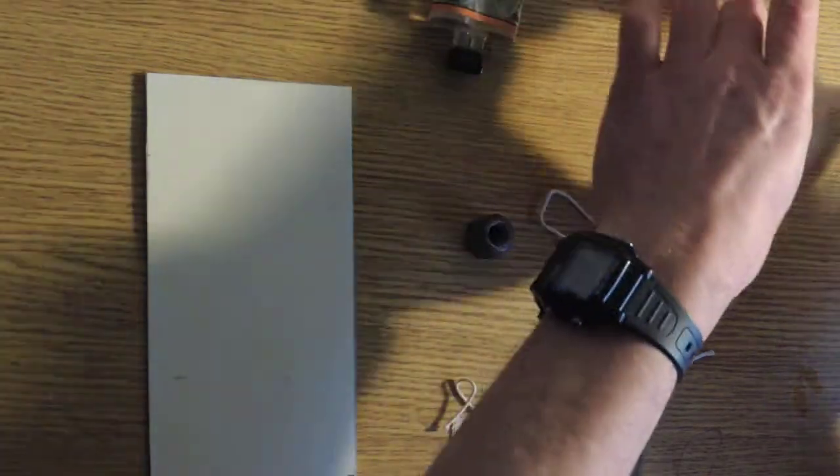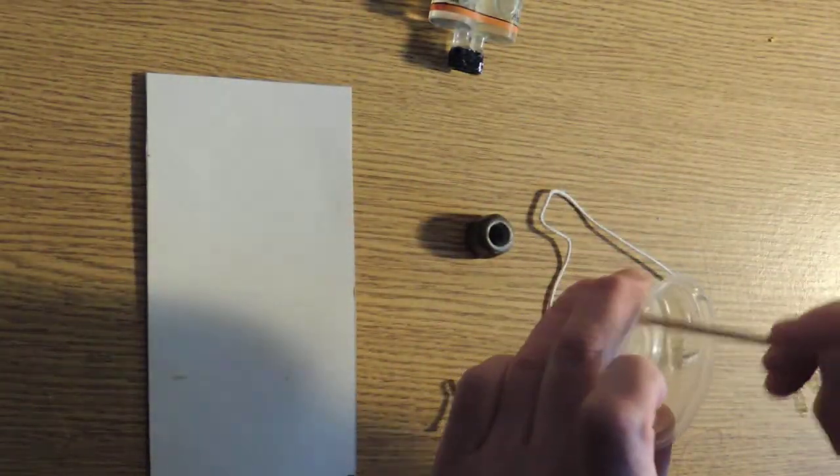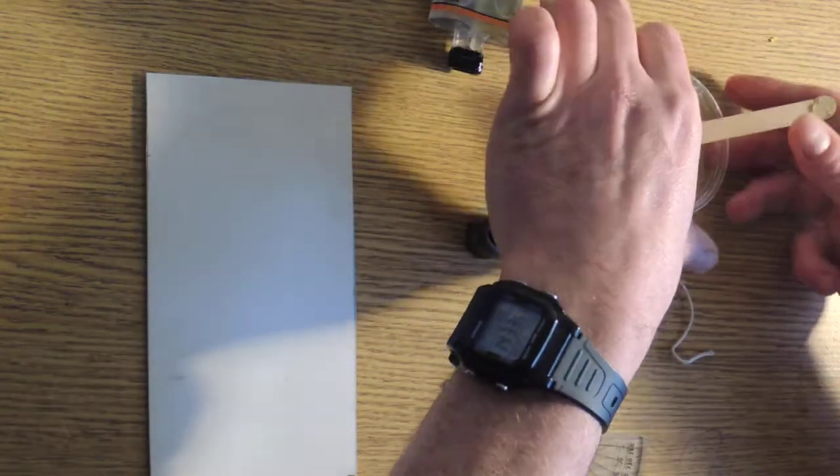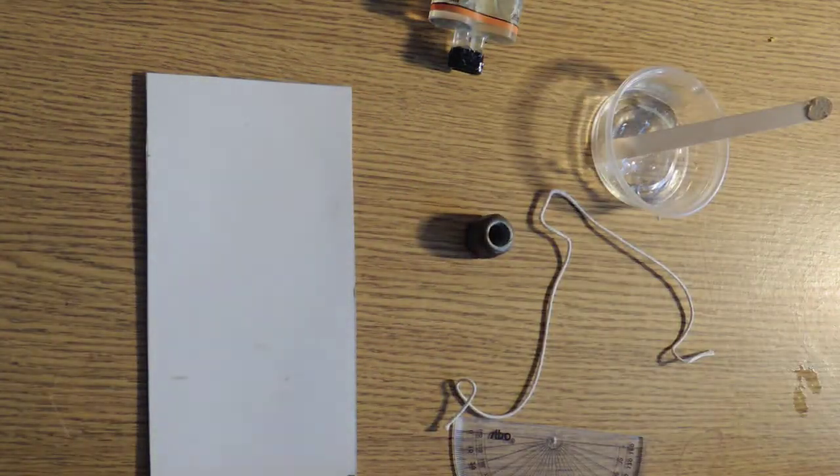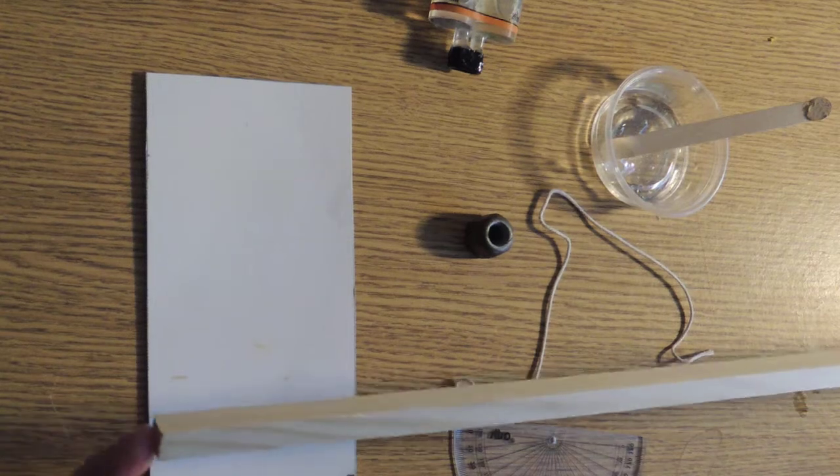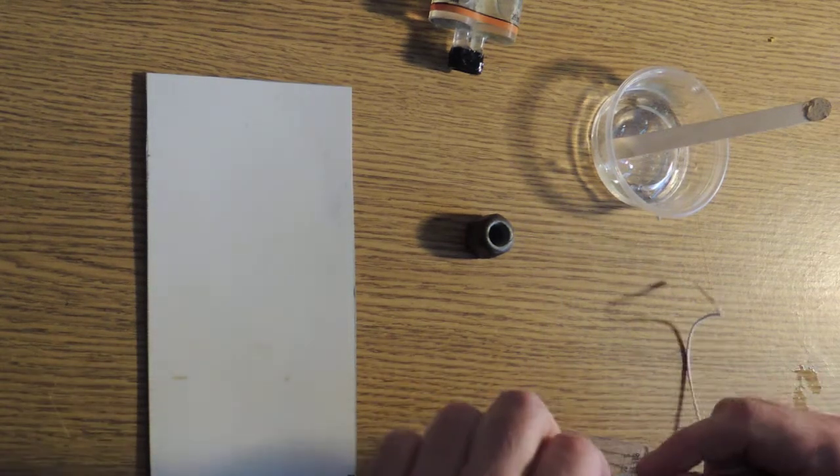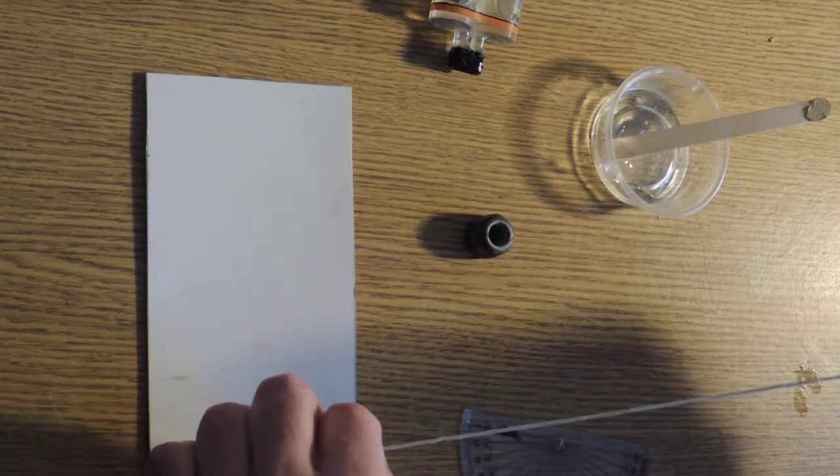With this epoxy, you have to squeeze the two components out, mix them together. That's what I've done already. Take your ruler or piece of wood. In fact, the first thing we should do is get a piece of string.